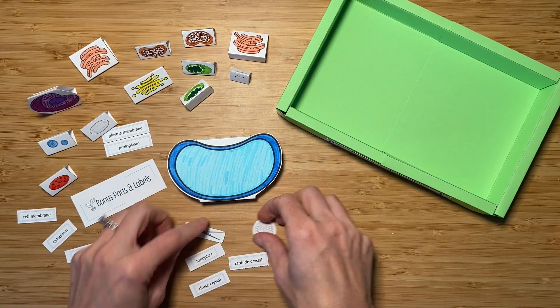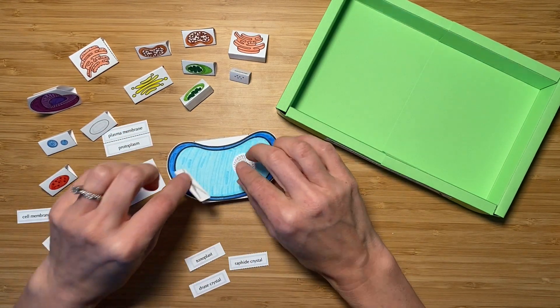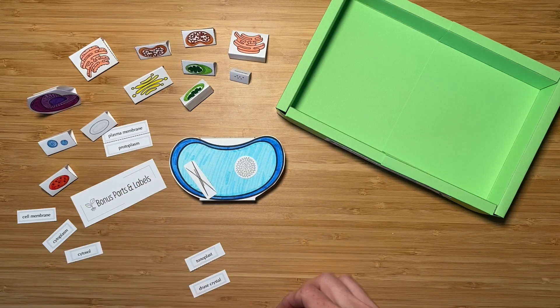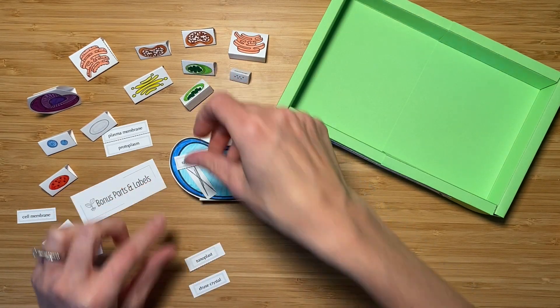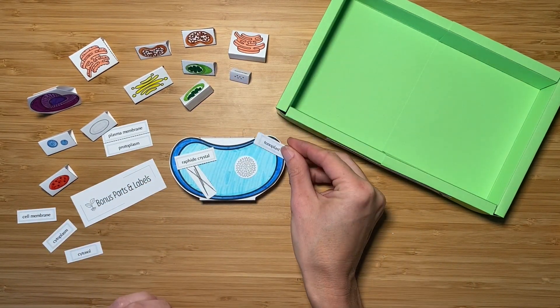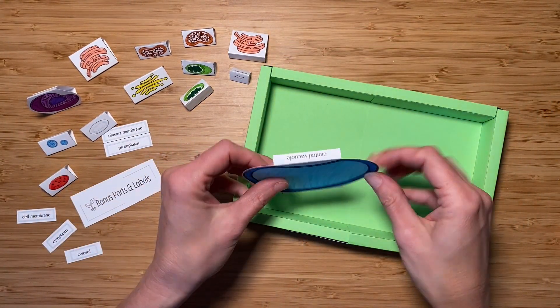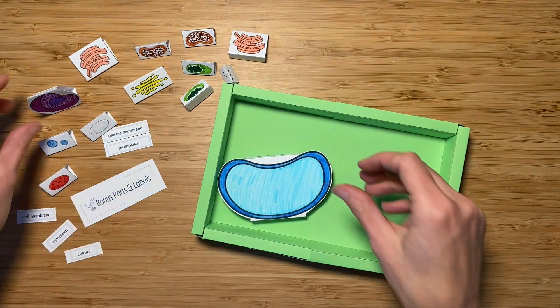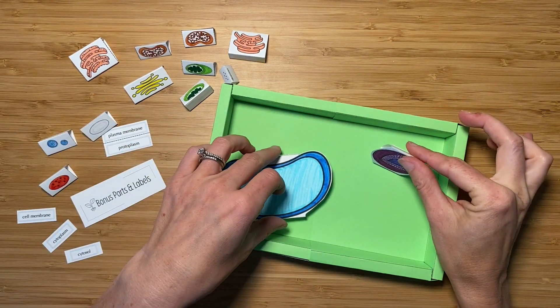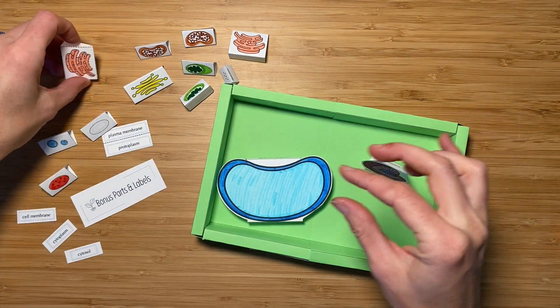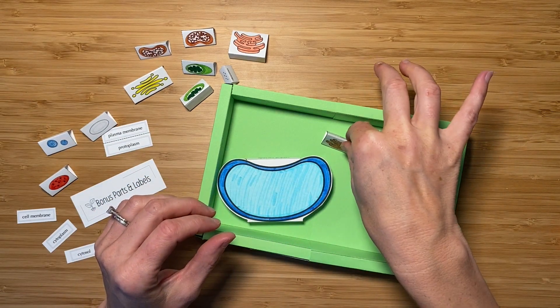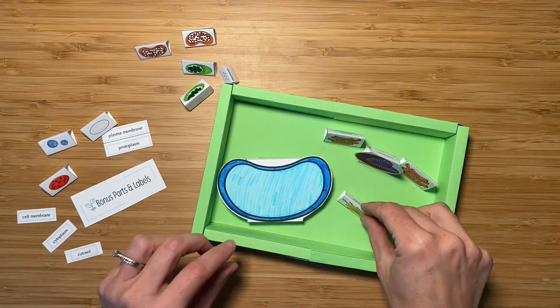These are some of the bonus parts associated with the central vacuole. So if you wanted to use those and you haven't done so already, go ahead and glue those on. Arrange the parts of the cell so the labels face the back. You can place them wherever you would like within the cell wall, but I do suggest you place them first to make sure you have enough space before you start gluing things down.